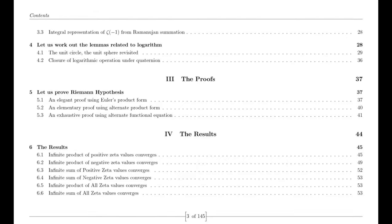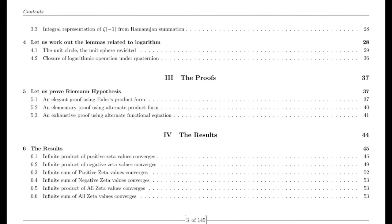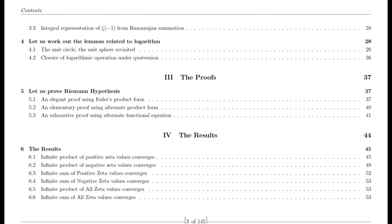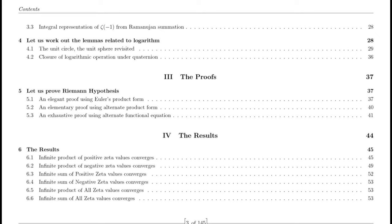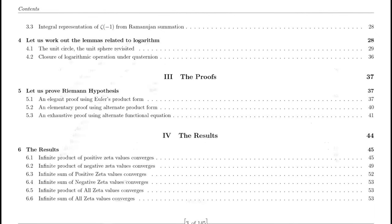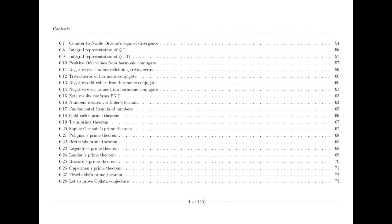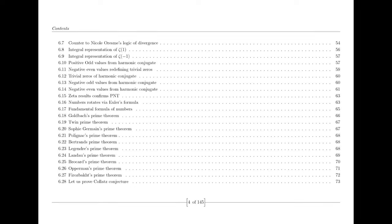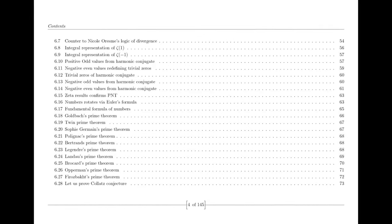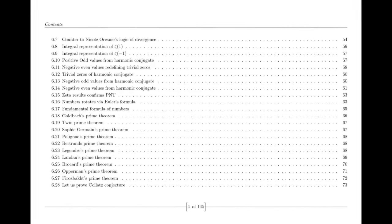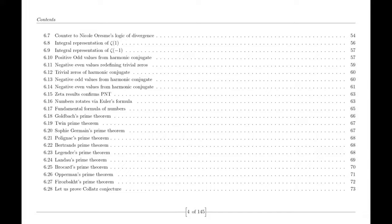Before we delve into the process of extending the domain of the Riemann zeta function and my personal journey in attempting to prove the Riemann hypothesis, let's first grasp the essence of what the hypothesis is all about. The Riemann hypothesis was formulated by Bernhard Riemann, a German mathematician, in 1859. It revolves around the distribution of prime numbers and their connection to the zeros of the Riemann zeta function.